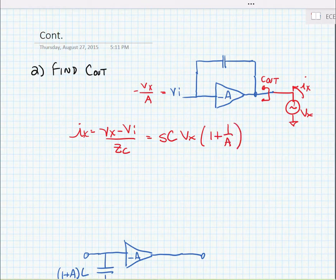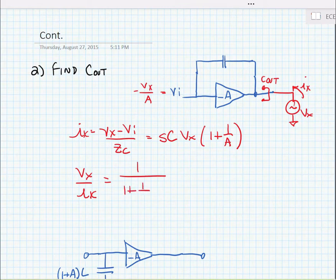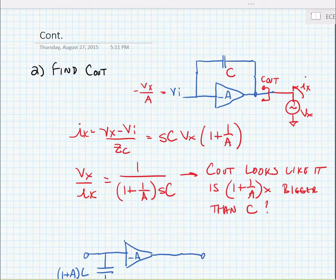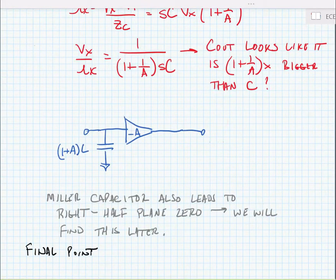And now we can write our expression for the resistance Vx over Ix, or the impedance Vx over Ix is equal to 1 over 1 plus 1 over A times sC. So again, this capacitance looks bigger than just C by itself. In fact, it looks like it's 1 plus 1 over A times bigger than C by itself. So we can complete our equivalent circuit model. Here we're going to add a capacitor to the output node that's equal to 1 plus 1 over A times C.